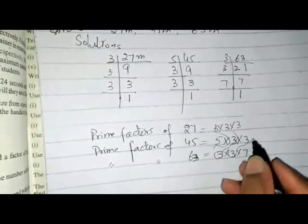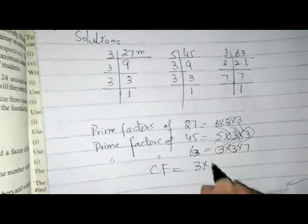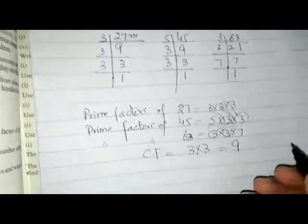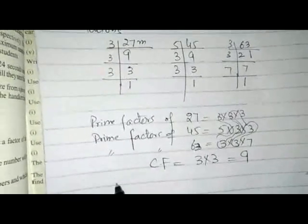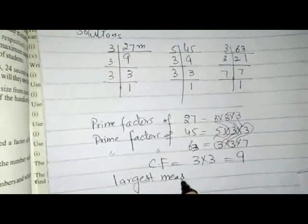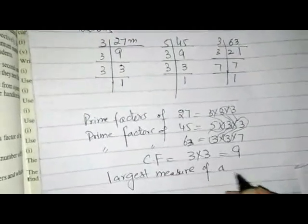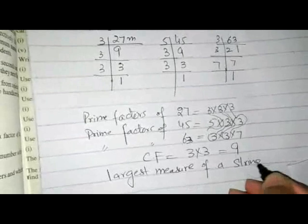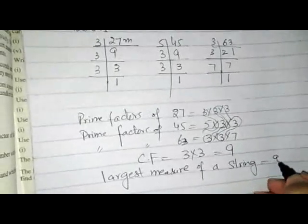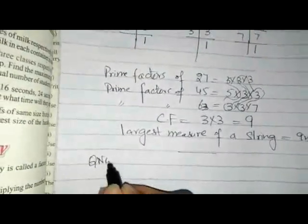The common factors are 3 and 3, so 3 × 3 = 9. This is our HCF, and this is the largest measure. So the largest measure of string is 9 meters.